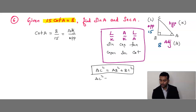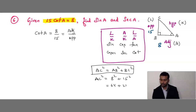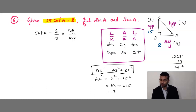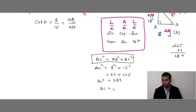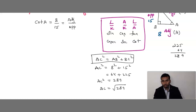Now substitute into the expression: 5 sin theta − 3 tan theta = 5 × (8/10) − 3 × (8/6) = (5 × 8)/10 − (3 × 8)/6 = 40/10 − 24/6 = 4 − 4 = 0. Therefore we have proved that 5 sin theta − 3 tan theta = 0. I hope you understood this problem.